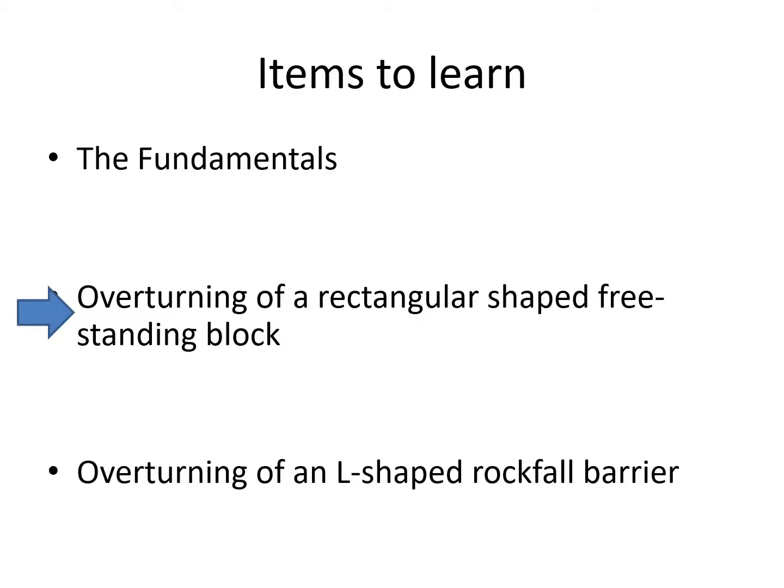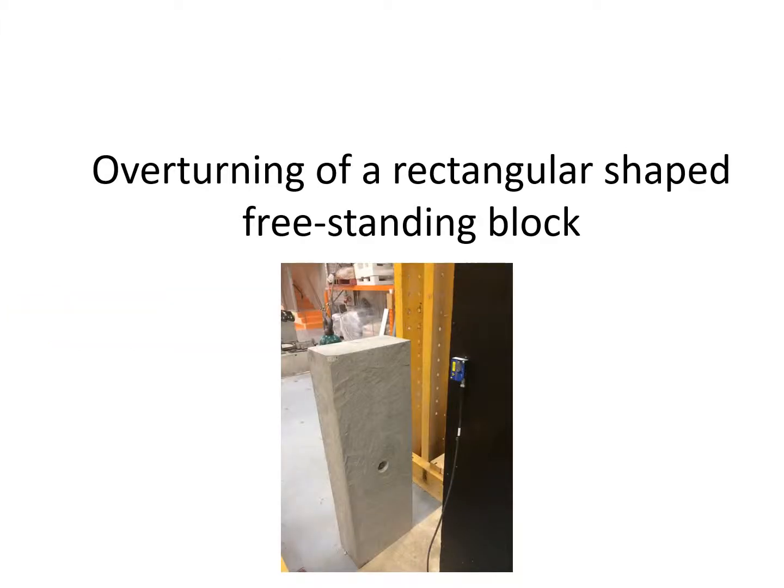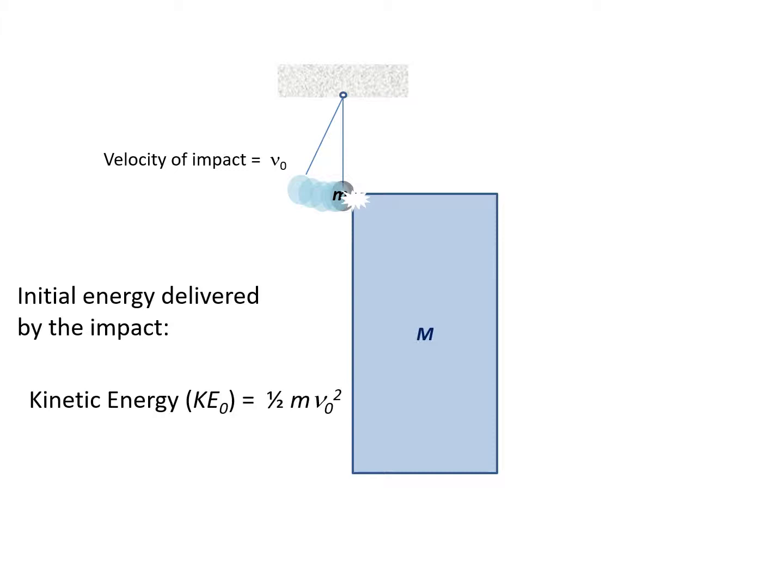What we have learned from the lectures on the fundamentals can be adapted to the predictions of the overturning of a freestanding block. To begin with, let's consider the simple example of a rectangular-shaped object. Reinforced concrete rectangular objects have been cast and tested to support this study.